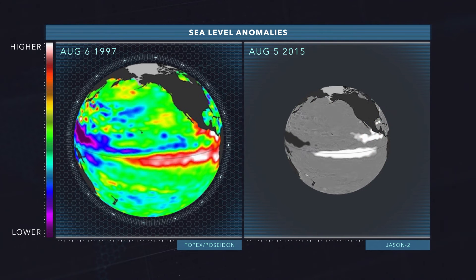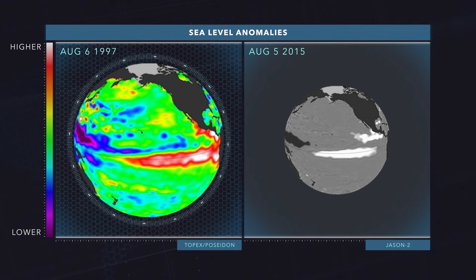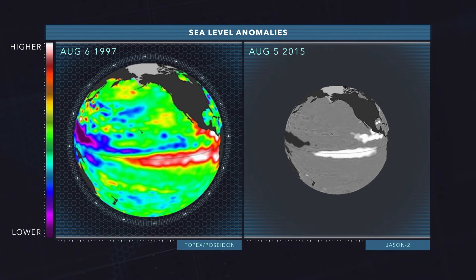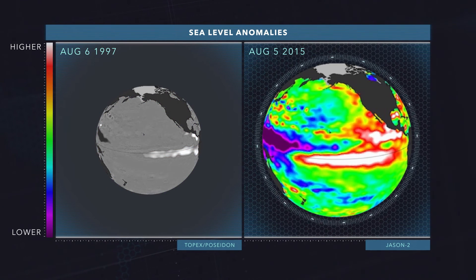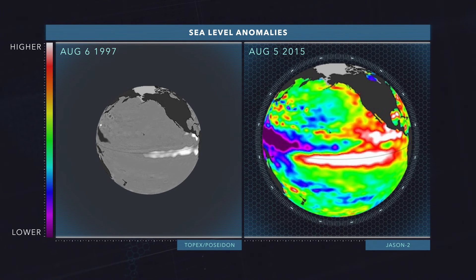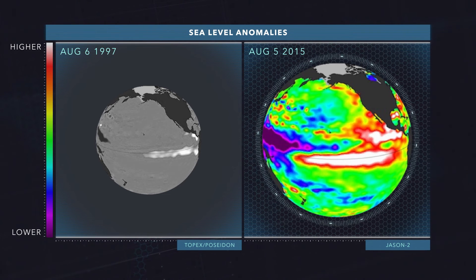The 1997 El Niño was the strongest ever recorded and had more impact than any other El Niño. So can we make the jump and say we have a stronger one in 2015 and therefore it's going to be the worst ever? It's difficult to make that jump, because they vary — they may be close to the same intensity, but the results vary considerably.